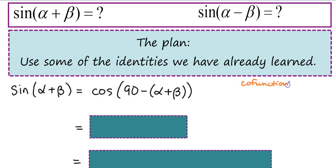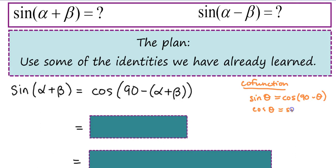We don't use them that often, but the co-function identities are like this: the sine of an angle equals the cosine of 90 minus the angle. You might remember we went over those on our first day of this chapter. Or the cosine of an angle equals the sine of 90 minus an angle. So we're using alpha plus beta as our angle, so the sine of alpha plus beta equals the cosine of 90 minus the angle alpha plus beta.